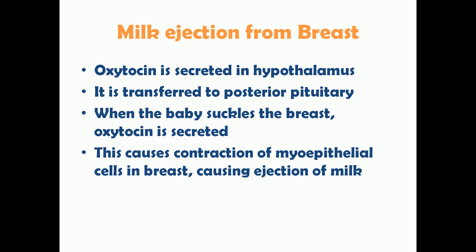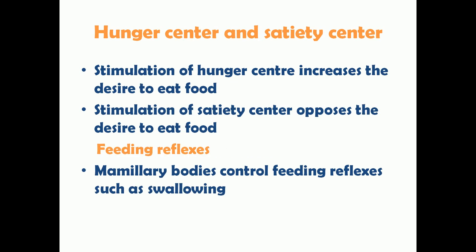The hypothalamus also enhances milk ejection from the breast during lactation. Oxytocin, a hormone secreted in the hypothalamus, is transferred to and stored in the posterior pituitary — the same way ADH is. When a baby suckles the breast during feeding, oxytocin is released from the posterior pituitary and acts on the myo-epithelial cells in the breast, causing their contraction and leading to ejection of milk.